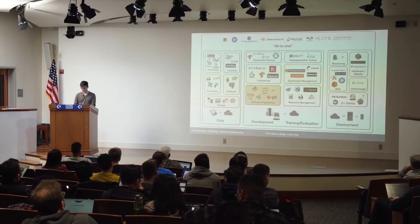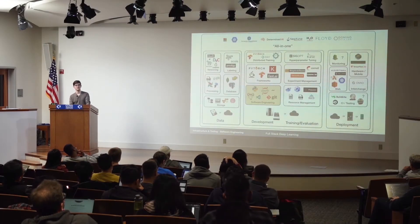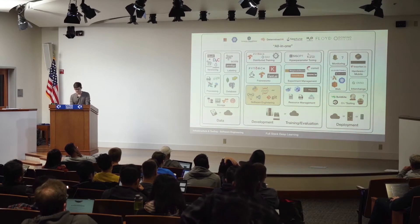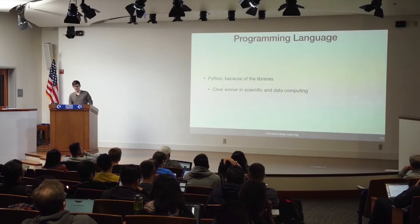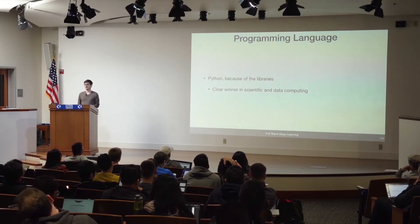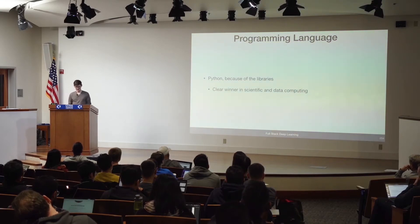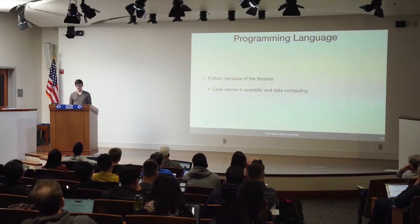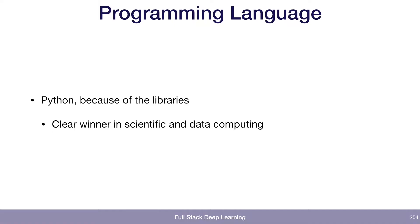Let's dive right in. The first topic is software engineering. The first thing is what programming language should we use? It seems like a basic question because the answer is clearly Python today. But maybe we should think about why the answer is Python — it's not necessarily because Python is a great language for scientific computing in itself, but because of the libraries that people have developed over time.